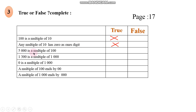5,000 is a multiple of 100. The multiples of 100 should end with 2 zeros. Does 5,000 end with 2 zeros? Yes, so true.